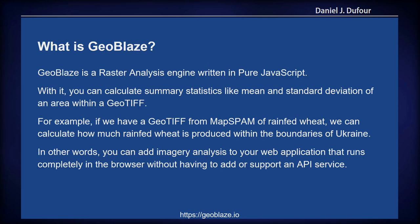What is GeoBlaze? GeoBlaze is a raster analysis engine written in pure JavaScript, which means you can run it completely in the browser. With it, you can calculate summary statistics like mean and standard deviation of an area within a GeoTIFF. For example, if you have a GeoTIFF from MapSpam of rain-fed wheat for the whole globe, you can select the area in Ukraine and calculate the sum of rain-fed wheat produced in that area.